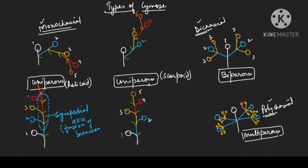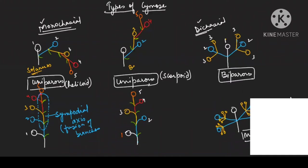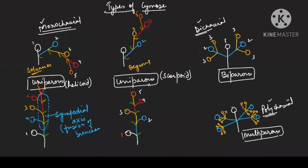Examples: uniparous helicoid example is Solanum; scorpioid example is Begonia; biparous example is Bougainvillea and Jasmine; multiparous example is Calotropis. These are the two main types of inflorescence — racimose and cymose.